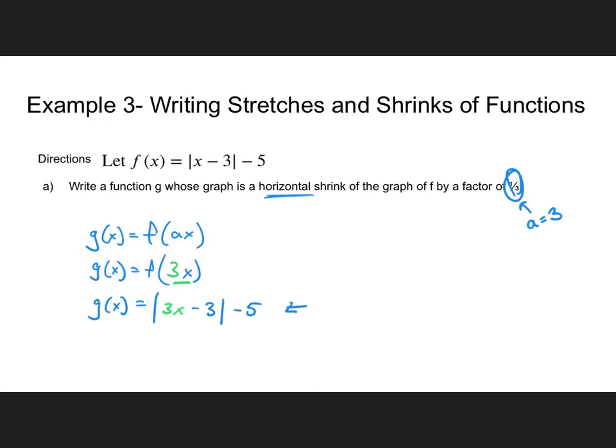There is some more algebraic manipulation you could do, kind of like what we talked about with transformations before in the last section, where you could actually take the 3 and factor it out if you wanted to, and end up with just a different version of the same answer, 3 times the absolute value of x minus 1 minus 5. But I'm not going to worry about that. This answer will be sufficient.